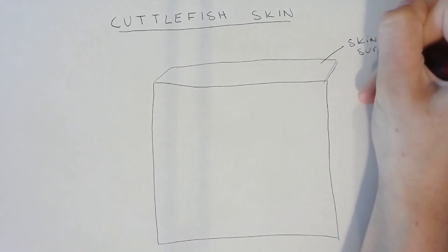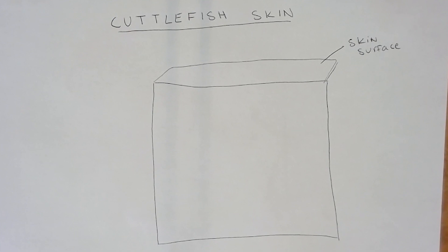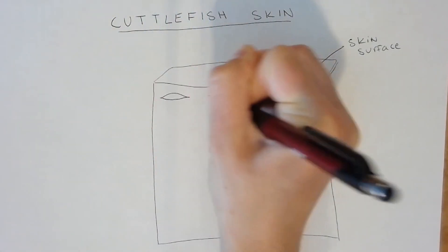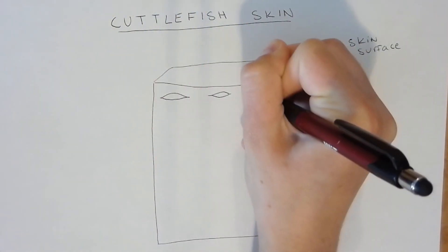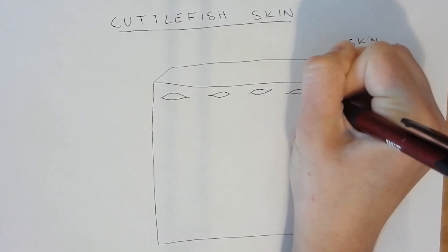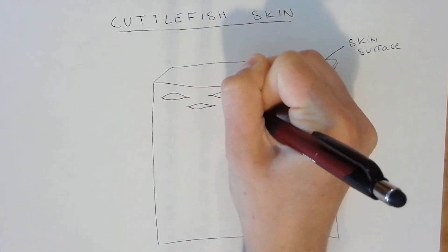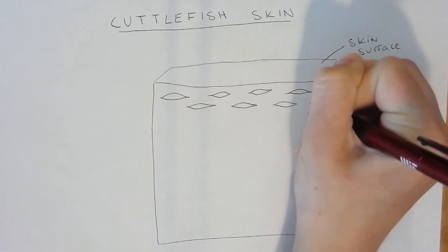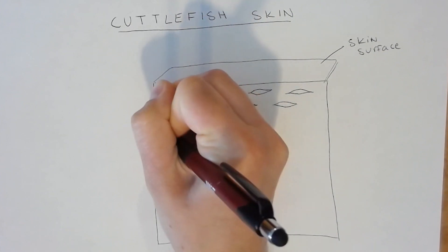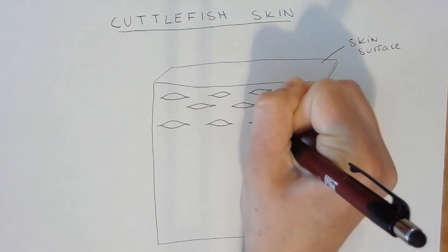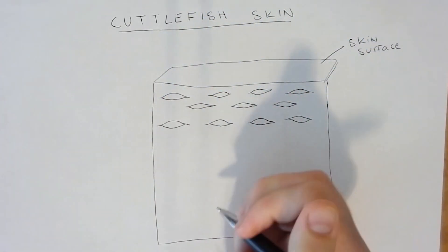The first layer is the chromatophore layer. This is made up of pigment-filled sacs which can be expanded and contracted by muscle fibers to change the dominant color being displayed. The top layer of chromatophores are yellow, followed by red, and finally brown.